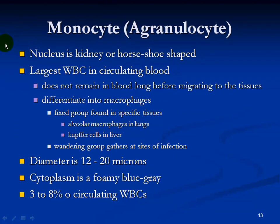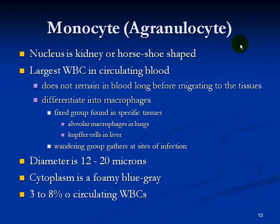Monocytes are agranular — no granules in the cytoplasm. The nucleus is either kidney or horseshoe shaped. They are the largest white blood cell in the circulating system and don't remain in the blood long. They migrate out of the capillary and into the outer tissues, where they primarily differentiate into macrophages that identify with specific tissues and protect them from invaders. These are called alveolar macrophages in the lungs and Kupfer cells in the liver. Wandering monocytes move to any site of infection. They make up about 3 to 8% of circulating white blood cells.